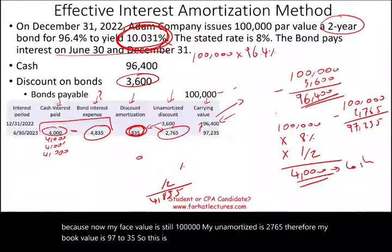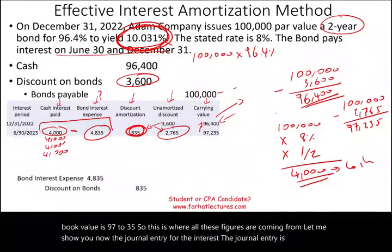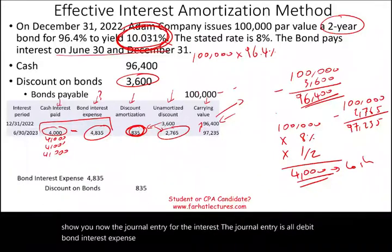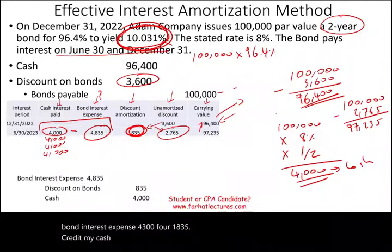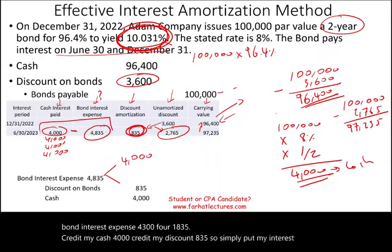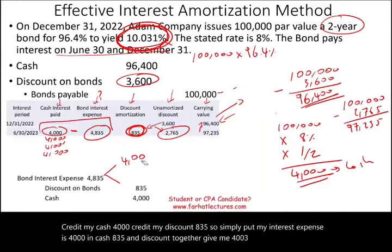The journal entry for the interest payment is: debit bond interest expense $4,835, credit cash $4,000, credit discount on bonds payable $835. Simply put, interest expense is $4,000 in cash plus $835 in discount amortization, together giving $4,835.